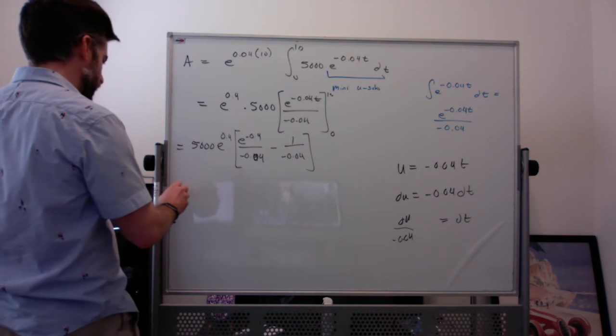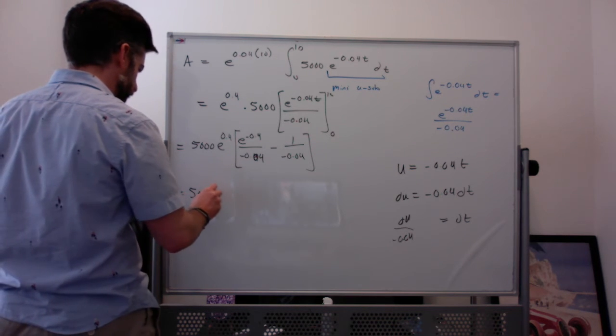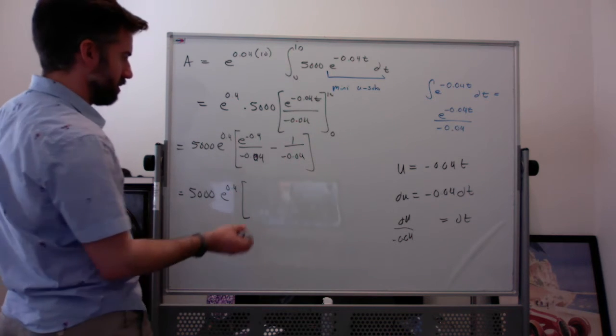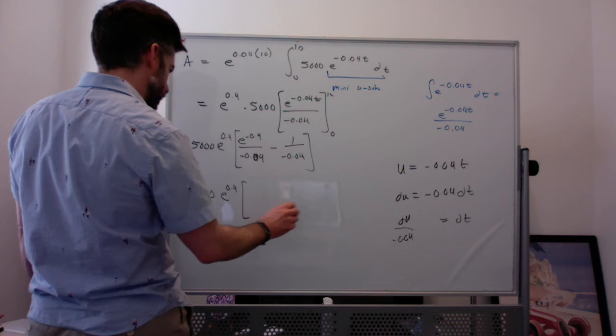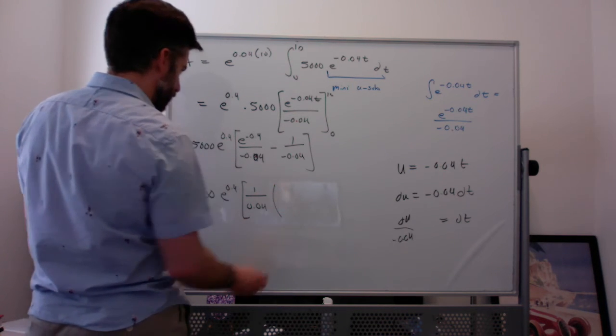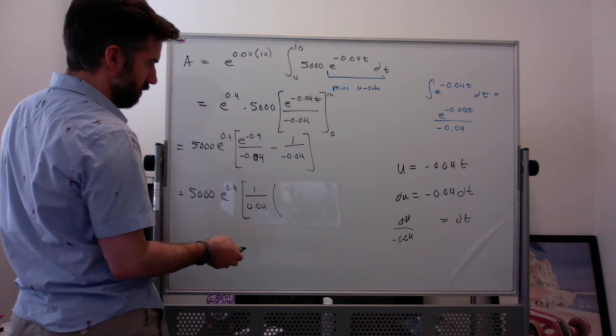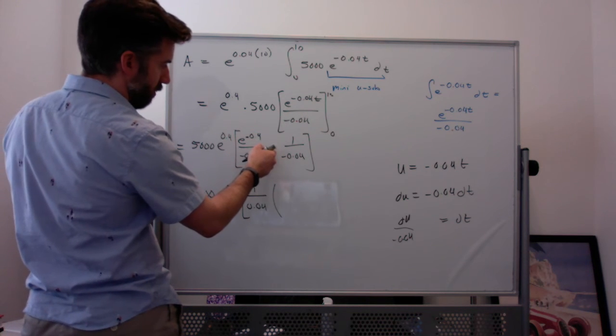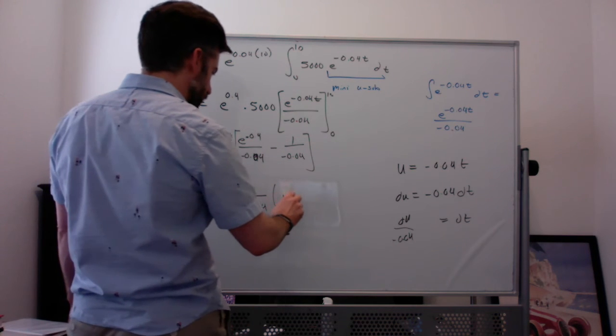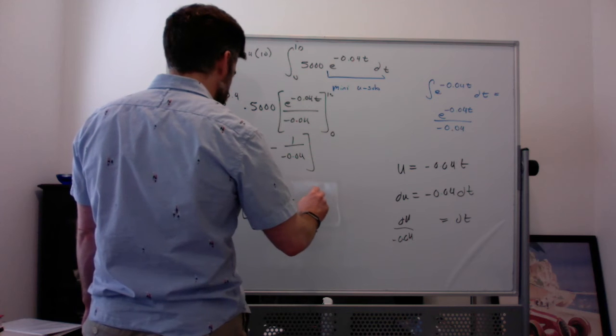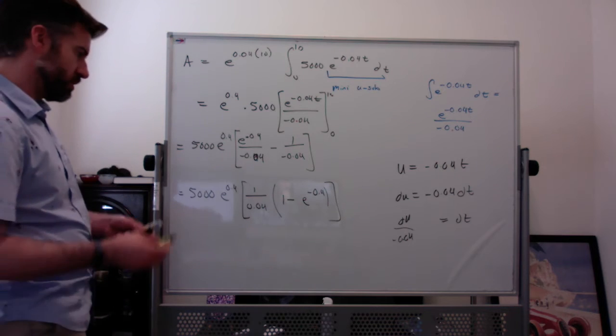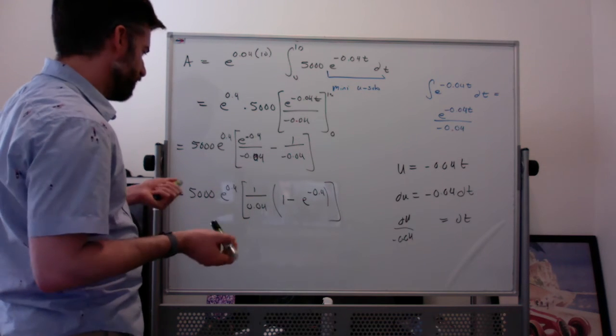I mean, we can simplify this a bit. I might rewrite this before. I might factor out the negative 0.04 or 0.04. And have negative E to the 0.4. Sorry, negative 0.4. Plus 1. I'm going to factor out this. I'm still going to minus this. This is minus that. This is 1 minus. It's kind of gross. Anyway. Simplifying this, you need to calculate at this point. Okay. It's getting out of the calculator.